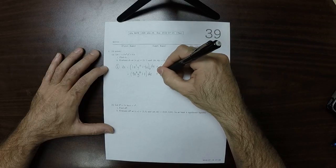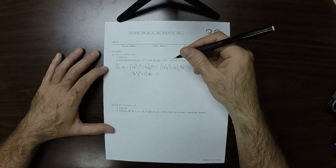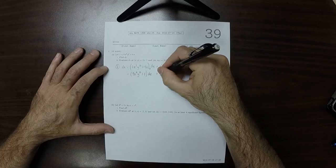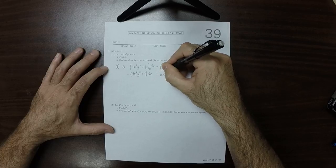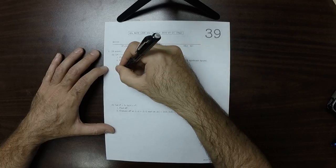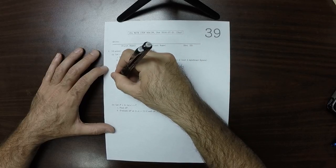That would be, so the y partial of 4x is 0, so that would be 6x cubed y times dy. So that's dz for part i.